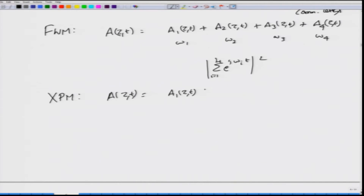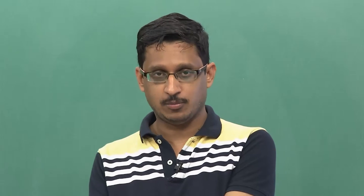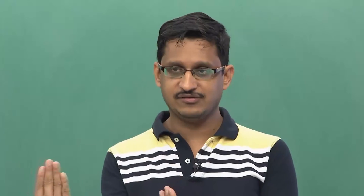To treat cross-phase modulation, write A(z,t) as A1 plus A2 and substitute into the nonlinear Schrödinger equation. You get a term 2 gamma L times magnitude of A2 squared multiplied by A1 — in addition to the self-phase modulation term gamma L times magnitude of A1 squared. So the power of the second component propagating through the fiber results in phase changes of wave A1. There is a factor of 2 here compared to the SPM factor of 1, meaning cross-phase modulation is a much stronger effect than self-phase modulation.